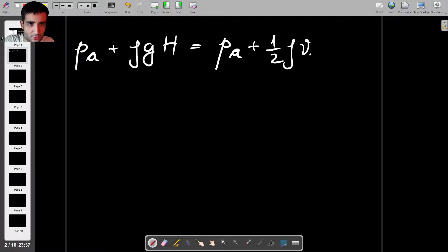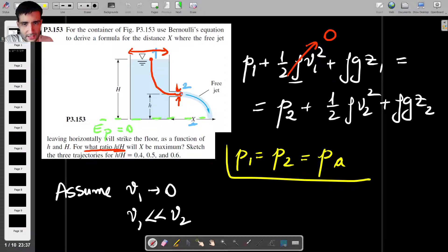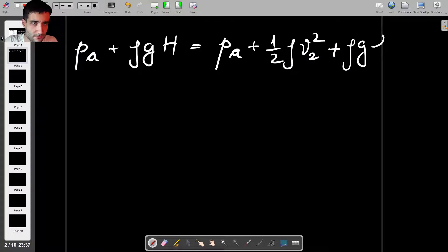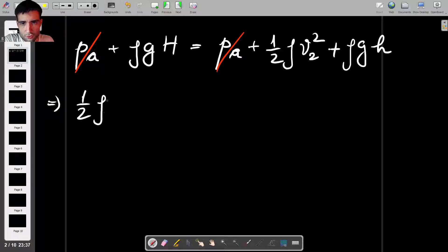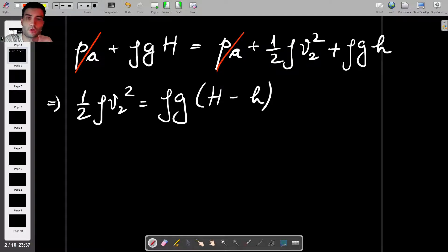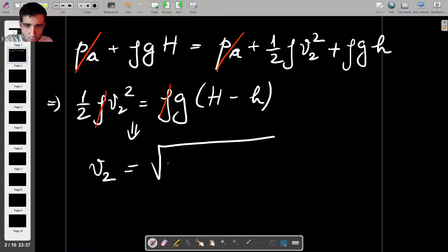plus half rho V2 squared. So this is the velocity that we're trying to actually find. Plus the potential energy at point 2, which is rho G lowercase h. Now the two atmospheric pressures cancel out, which gives us that half rho V2 squared will be equal to rho G times H minus h.